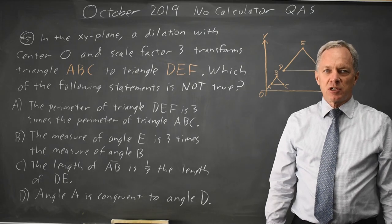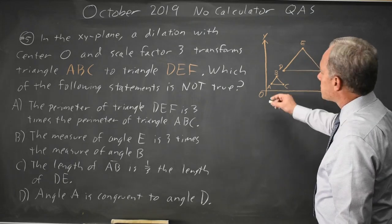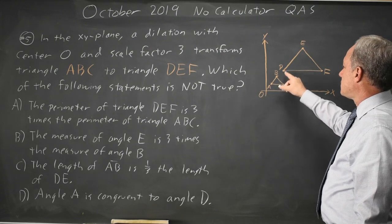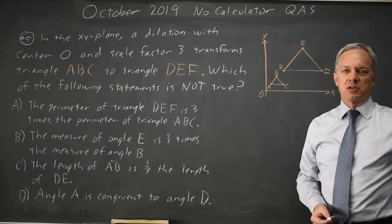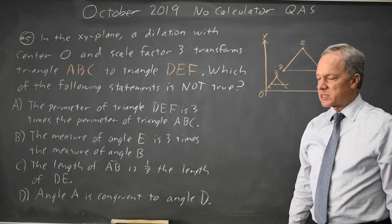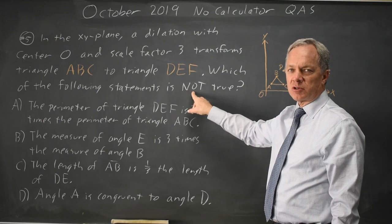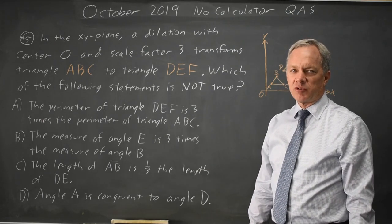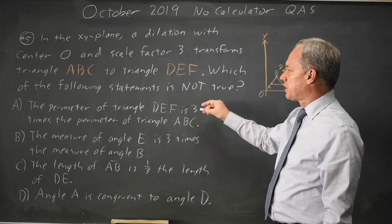This is question five. College Board gives us a dilation of a scale factor of three that transforms triangle ABC to DEF, and they ask which statement is not true. Always be careful on questions that have a word in all uppercase, bold, or underlined, because often that word will reverse the meaning of the question. The word 'not' does that.